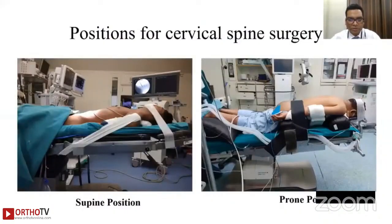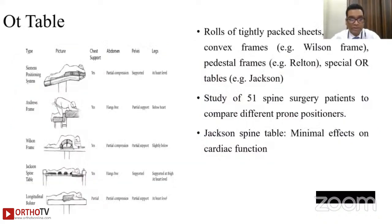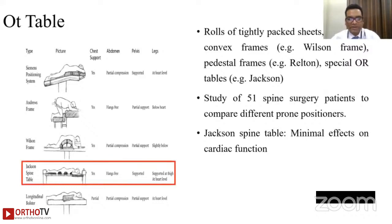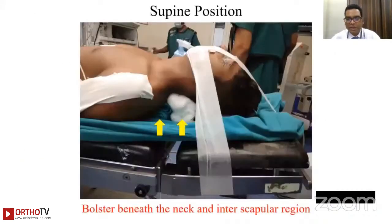Cervical spine surgery includes the prone position and the supine position. There are various tables available: the Siemens positioning system, the entry frame, the Wilson frame, the Jackson spine table, and longitudinal bolsters. We usually use the Wilson frame. Out of these, the Jackson frame has the minimum effect on cardiac function.